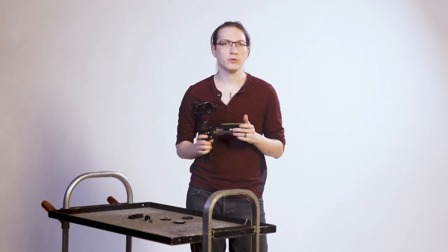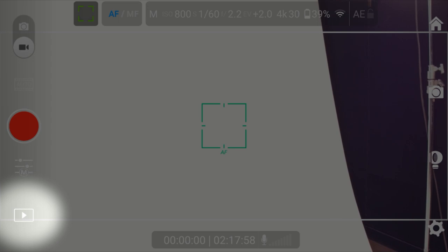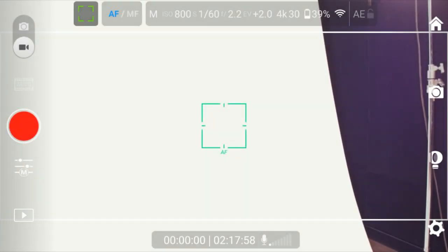Below that, in the bottom left hand corner, is an icon with a play symbol. This is used to switch to playback mode for reviewing footage quickly.